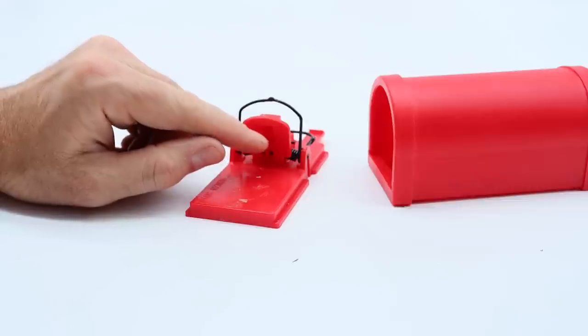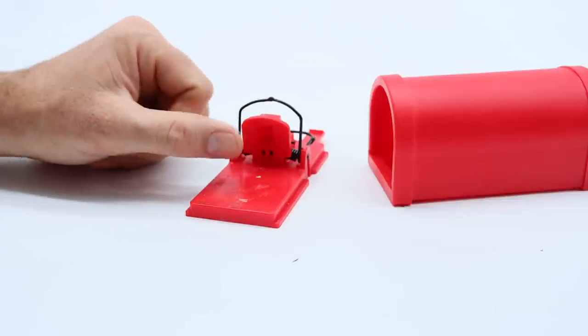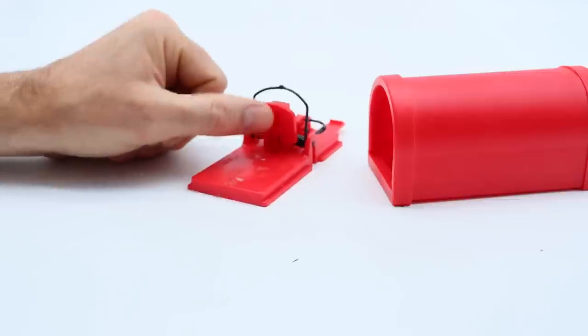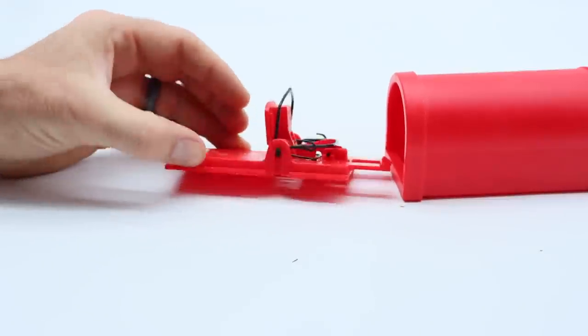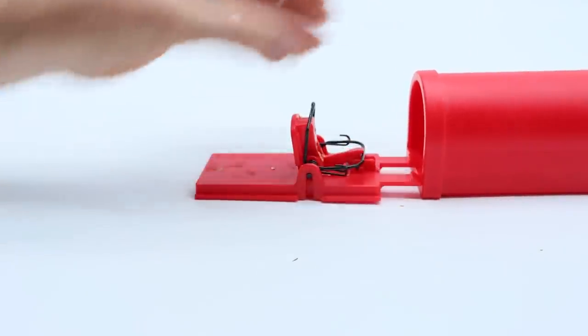Instead, it's going to gently lick the peanut butter, and it's completely fine. You can even push this, and it won't set off the trap. I'm so convinced this design doesn't work, I'm going to set it up one more night, but I'm not going to use the cover.